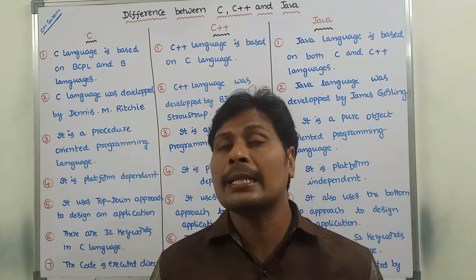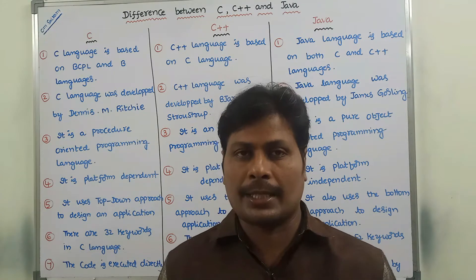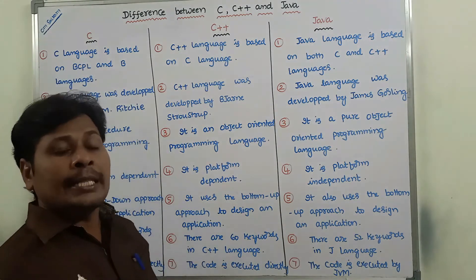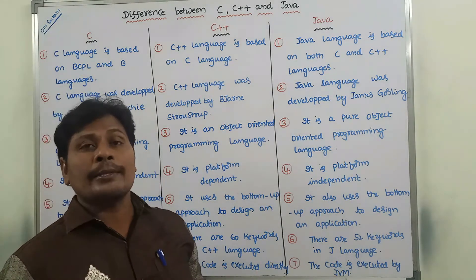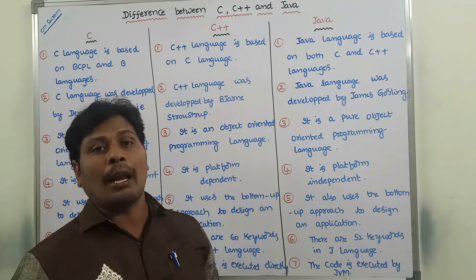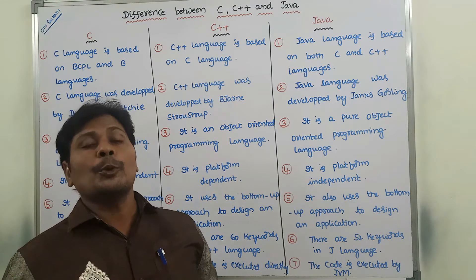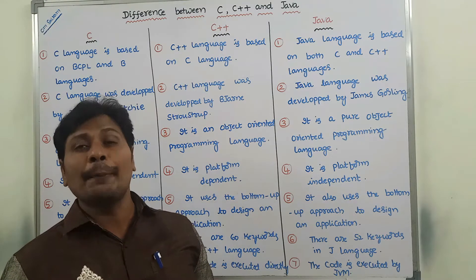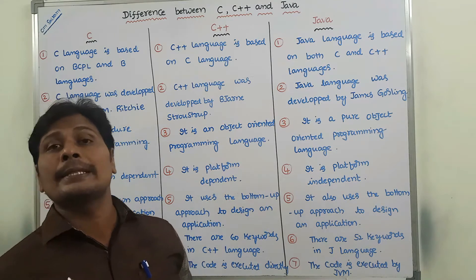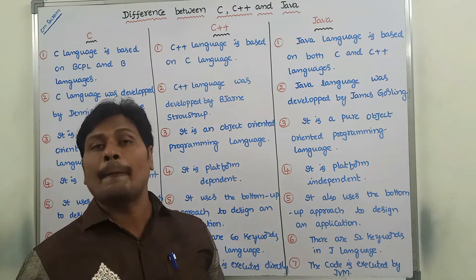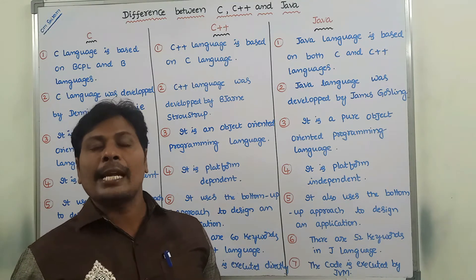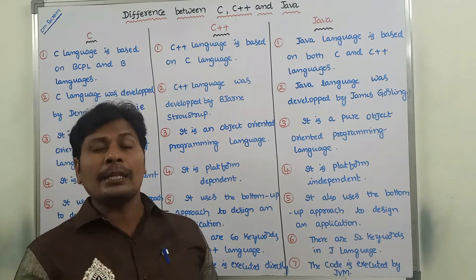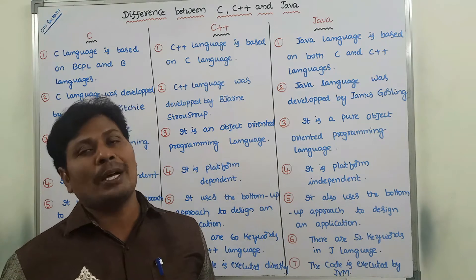The first point is C language is based on BCPL and B languages. To develop the C language, two dependent languages were used: first one is BCPL and second one is B language. BCPL stands for Basic Combined Programming Language. From those two languages, C language was developed.